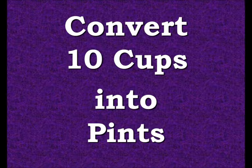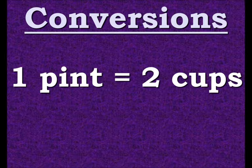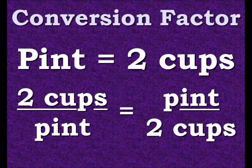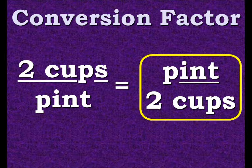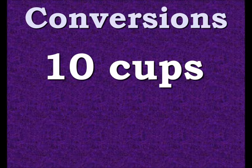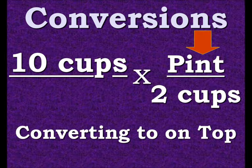We have 10 cups and that converts into how many pints. Here's our conversion factor again: one pint equals two cups. We put that into a ratio and now we make it equal to its inverse. We use this one because it has pints on top, which is what we're converting to. So 10 cups times the conversion factor — pints are on top this time.